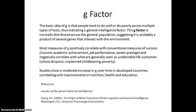The G factor is normally distributed across the general population and it's probably a product of several genes that interact with our environment. Most measures of G positively correlate with conventionally successful outcomes — good incomes, high academic achievement, good job performance, and career prestige. Negative correlates such as dropping out of school, unplanned childbearing, or poverty negatively correlate with G factor. Research shows G increases moderately over time in developing countries, correlating with improvements in nutrition, health, and education — so there is an environmental factor.